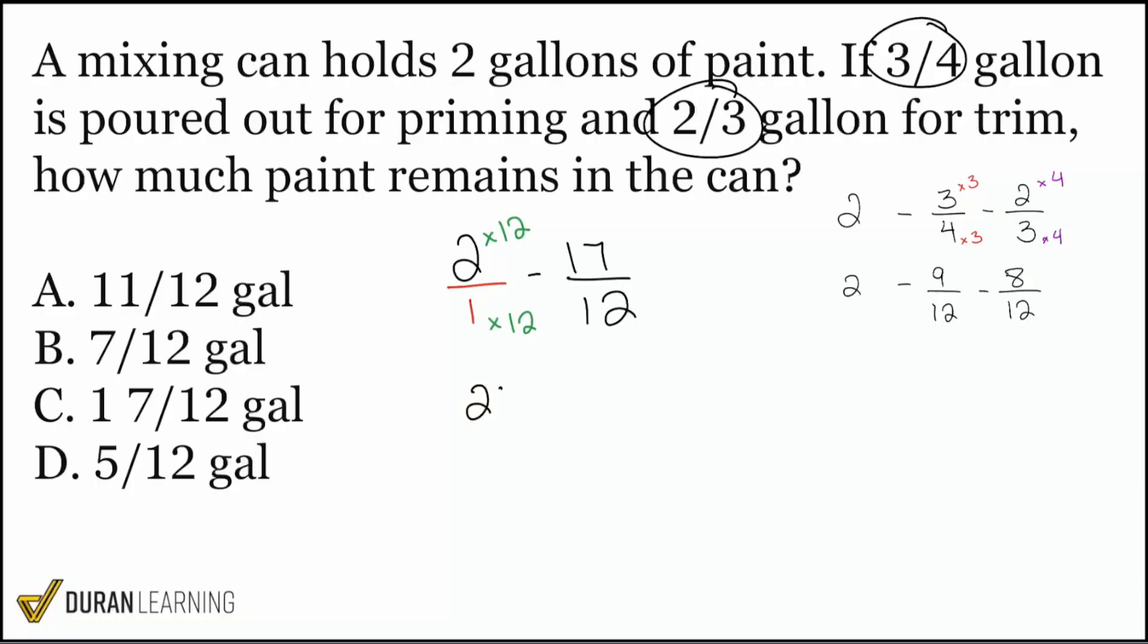And then we end up getting 24 over 12 minus 17 over 12. Help me out, my party people. What is 24 minus 17? 24 minus 17 ends up giving us 7. And there we are. That'll be 7 over 12. And there it is. That's how much paint remains in the can. 7 twelfths of a gallon. And there we are.